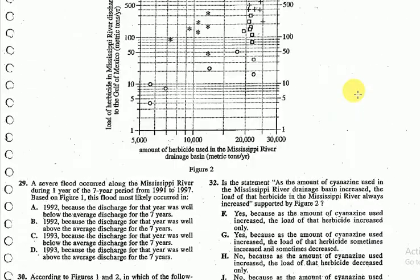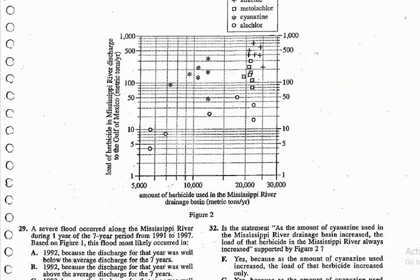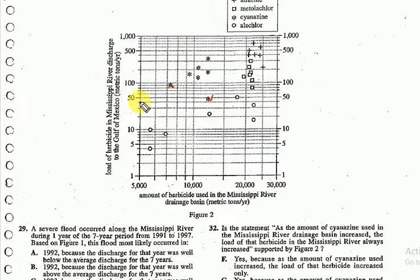Even if one value breaks the relationship, we can safely say the statement is wrong. Looking at the amount of herbicide used in the Mississippi River, the load of herbicide is generally between 50 to 100, nearing 100, and the trend is generally increasing. However, there's one anomaly: between 10,000 to 15,000, the load of herbicide is at its lowest — around 50 — which breaks the statement.